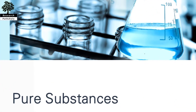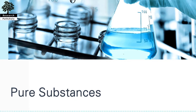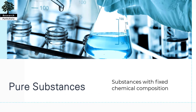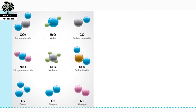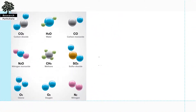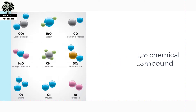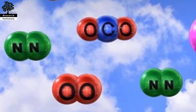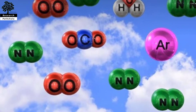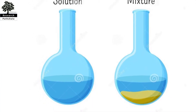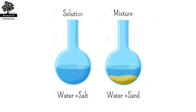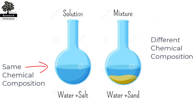Let us begin with our first point: pure substances. A substance that has a fixed chemical composition throughout is called a pure substance. Water, nitrogen, hydrogen, and carbon dioxide are all pure substances. A pure substance does not have to be of a single chemical element or a compound. Air is a mixture of various gases but is often considered to be a pure substance because it has a uniform chemical composition. A mixture of two or more phases of a pure substance is still a pure substance as long as the chemical composition of all phases is the same.